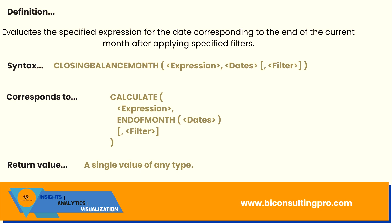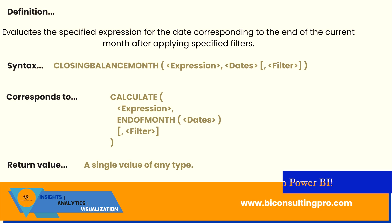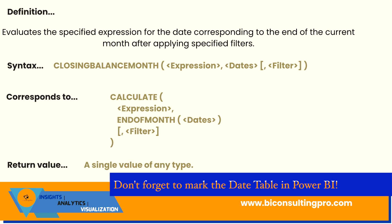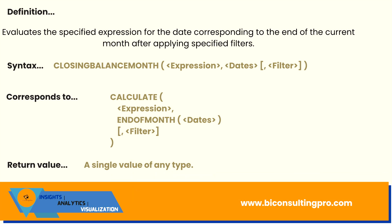You should remember that in order to use any time intelligence calculation, you need a well-formed date table. That means your table should always start from January 1st and end at December 31st. It can span a single year or multiple years, there should be no dates missing, and always remember to mark it as a date table.